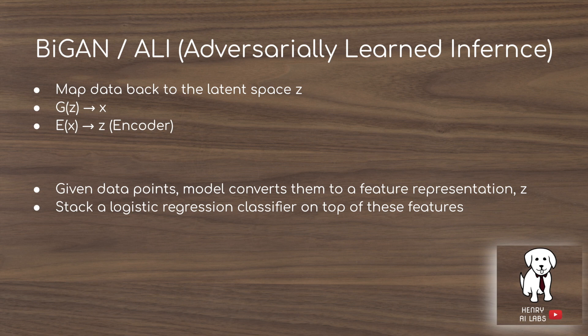The idea is to stack a logistic regression classifier on top of the Z features. After training the model, you take your dataset, pass it all through the encoder, and each image is converted to a vector of features. Then you stack a logistic regression classifier on top of those features.